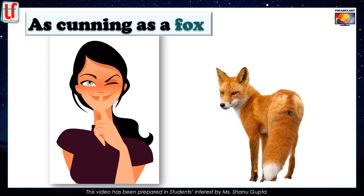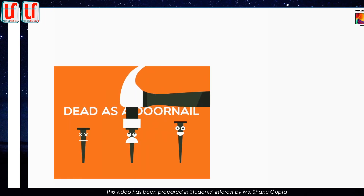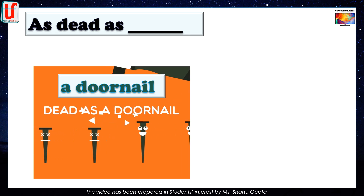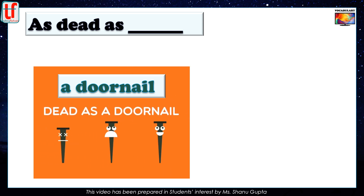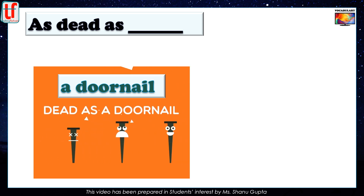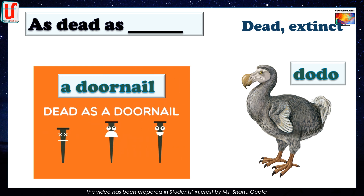As cunning as a fox. It means exceptionally clever or cunning. If you have read Panchatantra stories, you will relate to this expression. As dead as a doornail — which means dead. A variant of this simile is as dead as a dodo. Dodo was a bird that existed on our earth but it's now extinct. Both similes mean dead or extinct.